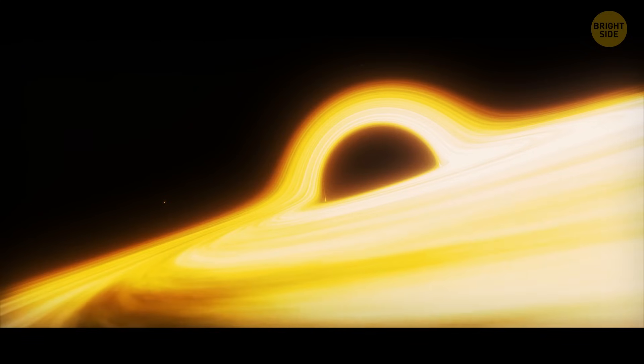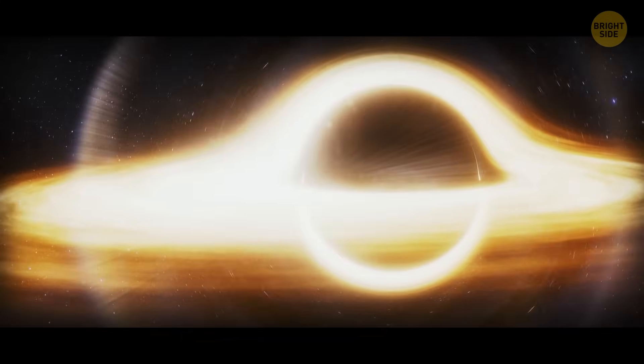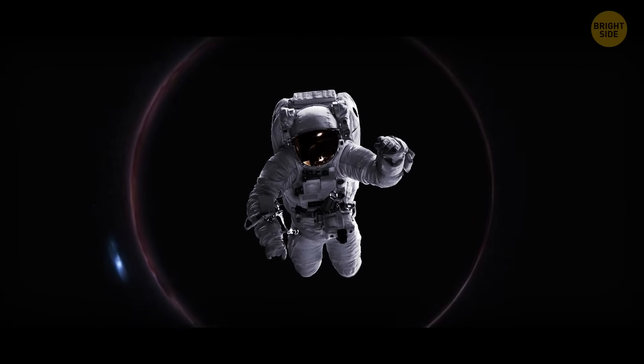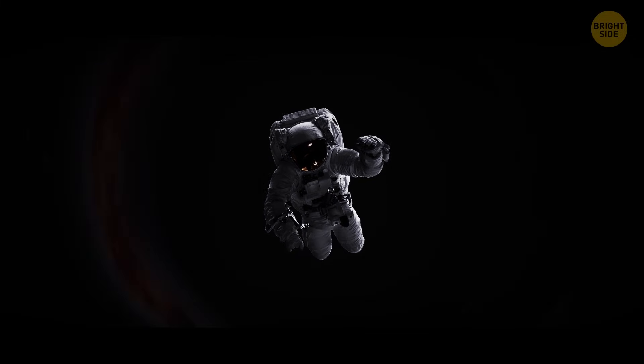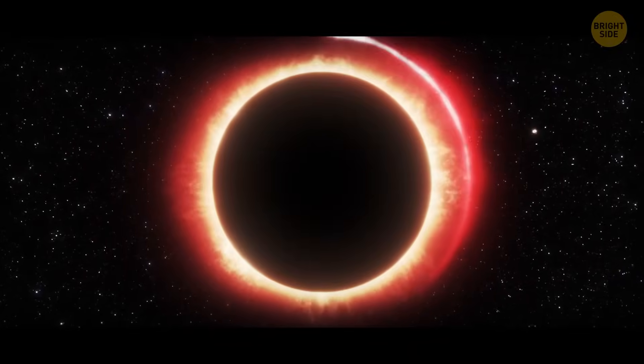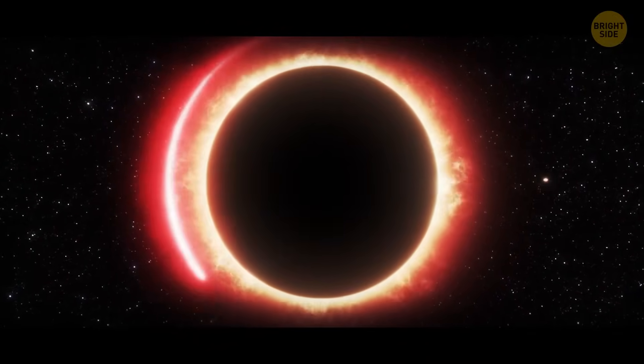Inside that shadow, there's an event horizon. The event horizon is the boundary around the black hole, beyond which nothing, not even light, can escape its gravitational pull. It's the point of no return, where the gravitational force is so strong that even the fastest object in the universe, light, can't escape. Once you cross the event horizon, you're doomed to fall toward the center of the black hole, where the laws of physics as we know them break down.